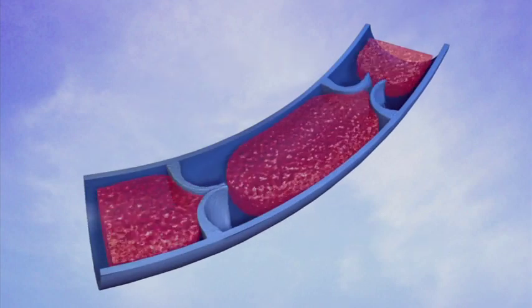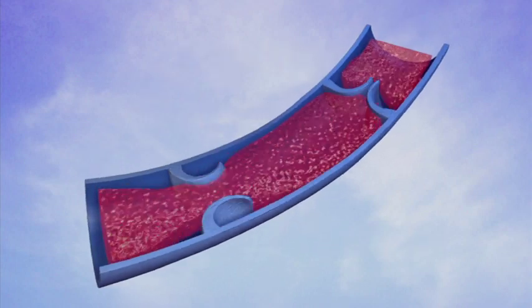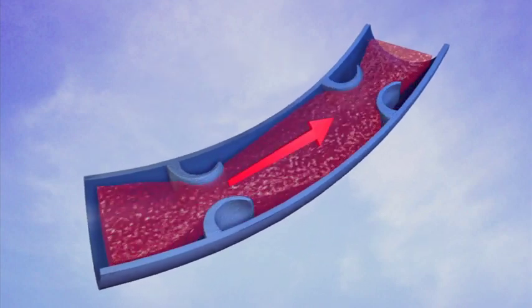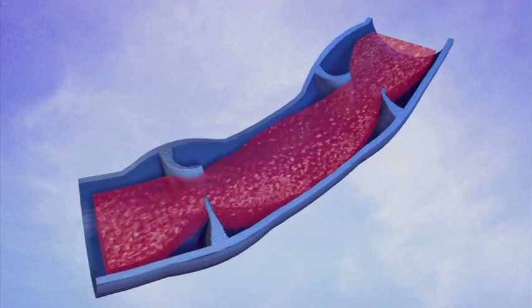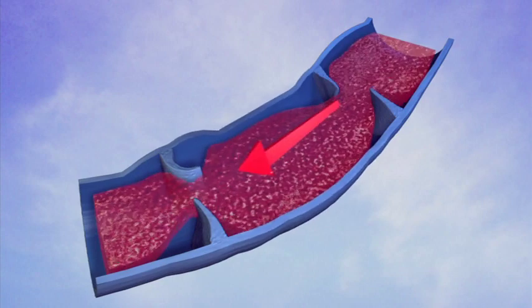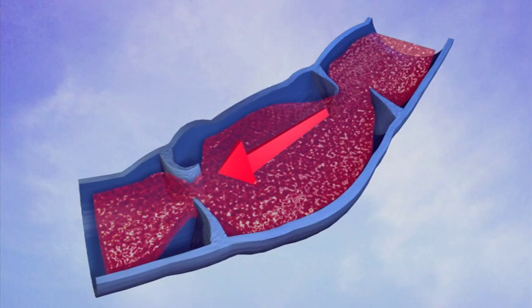In healthy veins, one-way valves prevent blood from pooling and flowing backwards. In diseased veins, however, the valves do not close properly and allow blood to pool in the extremity. This pooling of blood, also referred to as reflux, causes pain, heaviness, bulging veins, skin changes, superficial blood clots, and occasionally ulcerations in the leg.